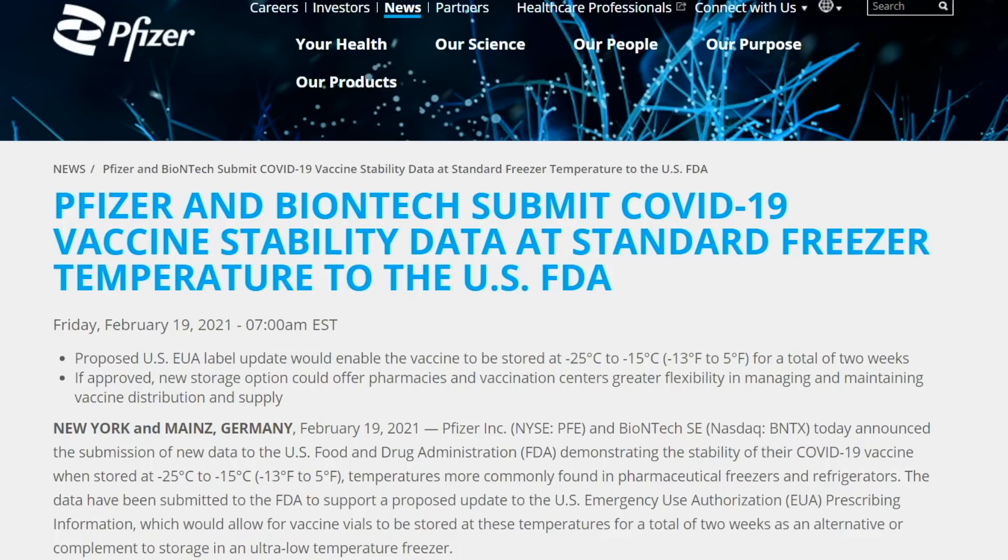What we're seeing here is a proposed U.S. EUA or Emergency Use Authorization label that would update and enable the vaccine to be stored at just negative 25 degrees Celsius to negative 15 degrees Celsius for a total of two weeks. If that gets approved based on this press release from Pfizer, that would greatly simplify the ability for the Pfizer vaccine to be distributed at those more reasonable temperatures.